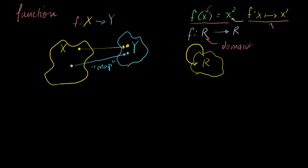Just as a bit of terminology — and I think you've seen this before — the set that you are mapping from is called the domain. It's part of the function definition. As the function creator, I have to tell you that every valid input has to be from a set of real numbers. Now, the set that I'm mapping to is called the codomain.